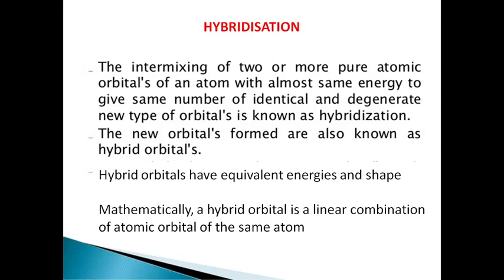Hybridization is the intermixing of two or more pure atomic orbitals of an atom with almost the same energy to give the same number of identical and degenerate new orbitals. These new orbitals are known as hybrid orbitals. Mathematically, hybrid orbitals are a linear combination of atomic orbitals of the same atom.